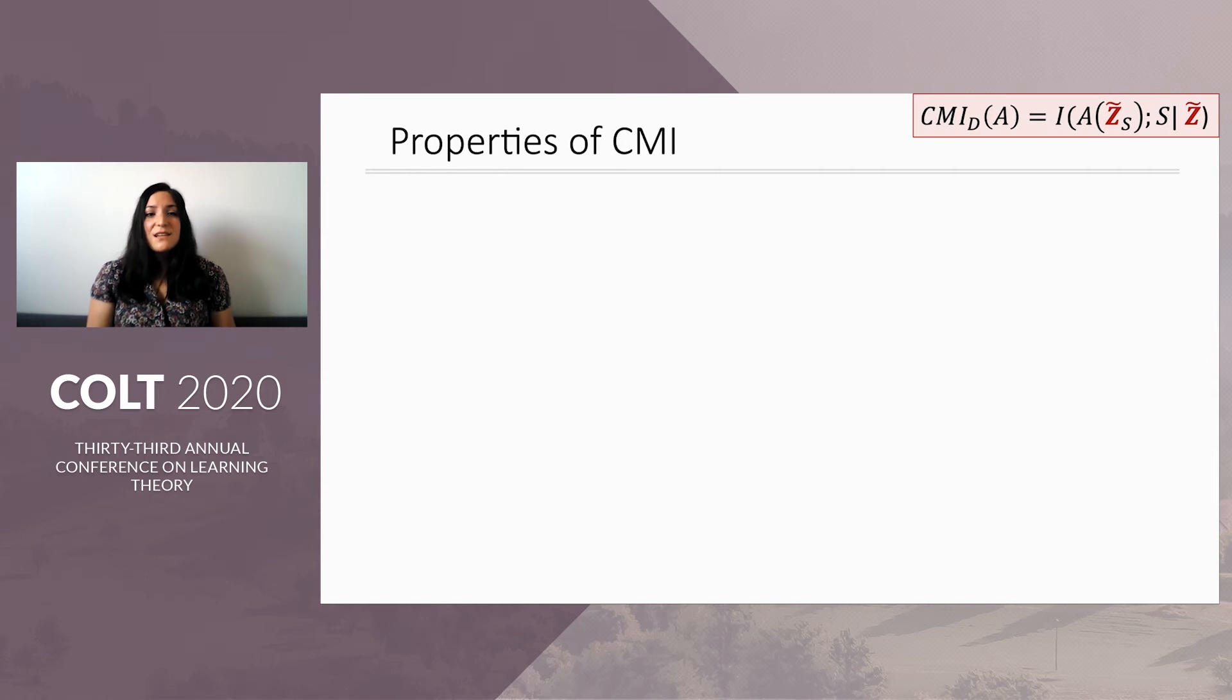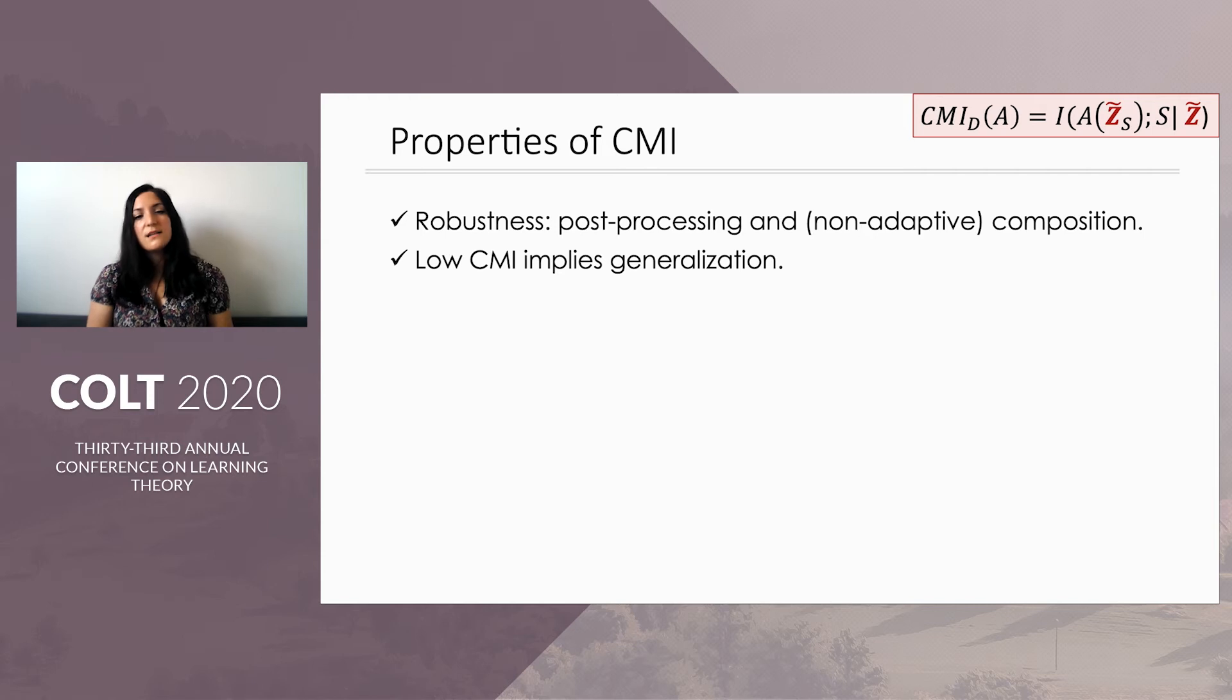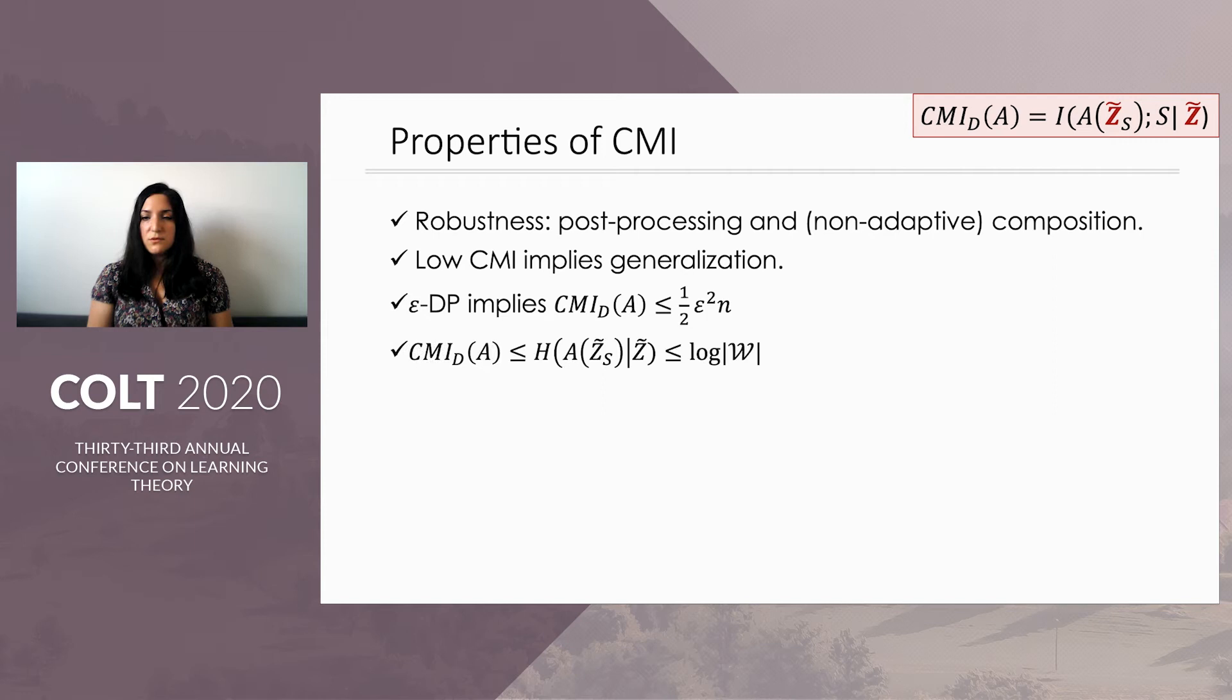Now, CMI satisfies some important robustness properties, like post-processing and non-adaptive composition. And its key property, of course, is that low CMI implies generalization. And we also can get CMI bounds from pure differential privacy. You can get the same bound of epsilon squared n over two. And we can also retrieve a bound from the size of the output space, as we did before. So all these bounds, all these things hold for mutual information as well.